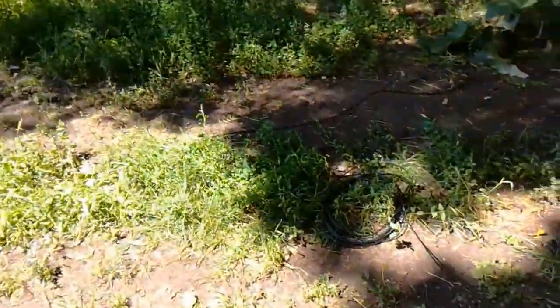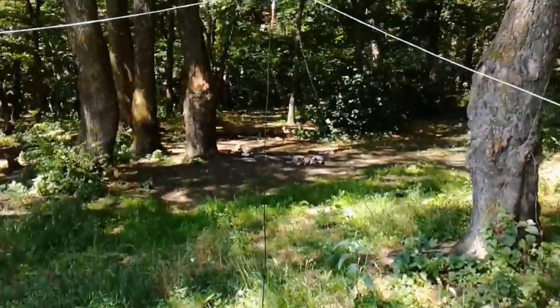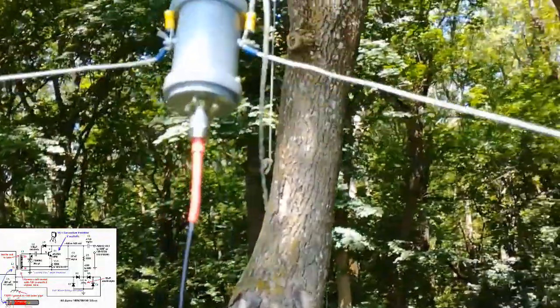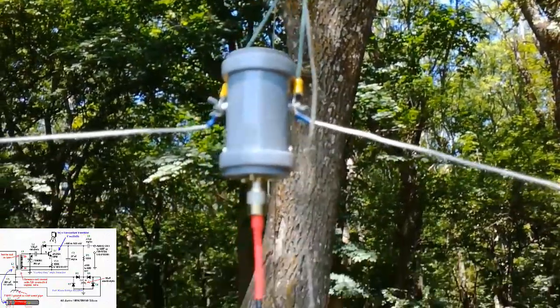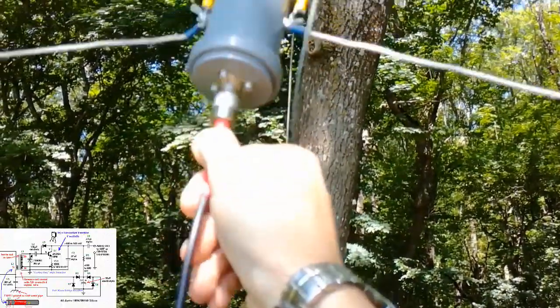Many experiments have confirmed the presence of a voltage difference between a raised radio antenna and the Earth's ground potential. This voltage typically ranges from about 0.3 to just over 1 volt.